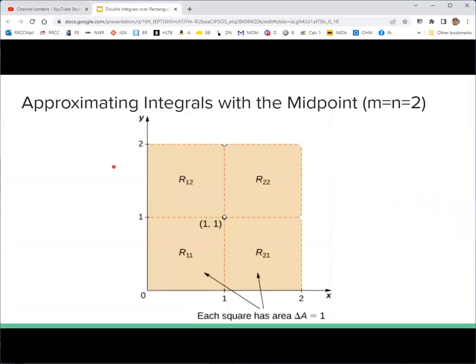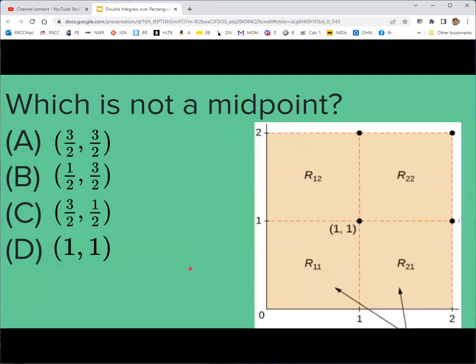Here's a look at those four boxes. And then luckily, the area of each of these is just one. So we don't really need to worry about that in the actual calculation, it'll just be times one. I need to find the midpoint of each of these boxes. So which of these points is not a midpoint?